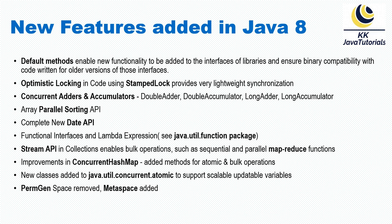The next feature is a new class added in JDK 1.8 called StampLock. If you go to the java.util.concurrent.locks package, you'll find this class. It is used for optimistic locking — StampLock provides very lightweight synchronization. I have a separate video tutorial on this topic on KKJava Tutorials, and in fact separate tutorials for all the individual points we're looking at in this slide.